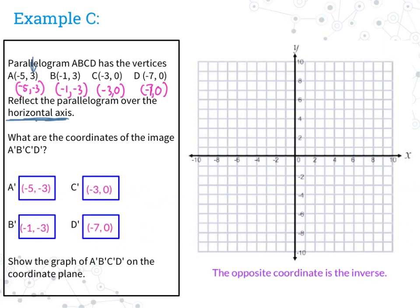So when we write them down: A prime is negative 5, negative 3; B prime is negative 1, negative 3; C prime is negative 3, 0; and D prime is negative 7, 0. But that's not the end of the problem, because it asks us to show this on the coordinate plane. So now we need to graph what we just figured out. We go to negative 5, negative 3 and label that A prime; go to negative 1, negative 3 and label that B prime; go to negative 3, 0 and label that C prime; and go to negative 7, 0 and label that D prime. Now connect all the points and we have our parallelogram.